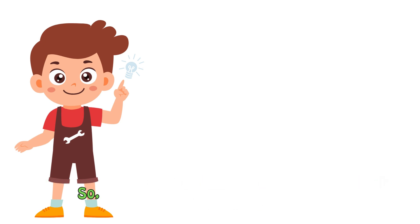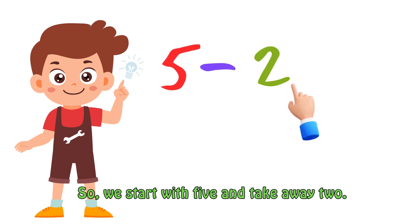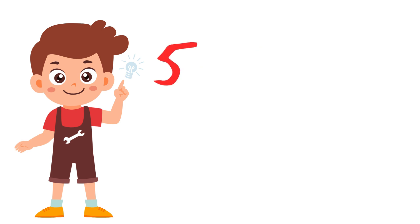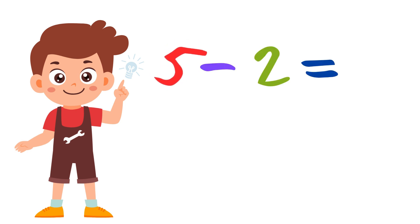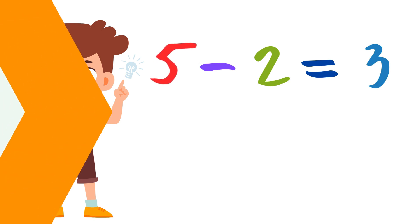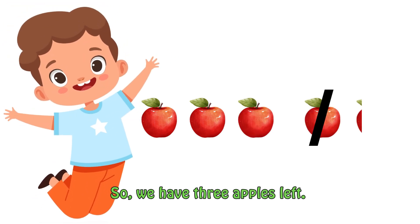So we start with five and take away two. Like this. Five minus two equals three. So we have three apples left.